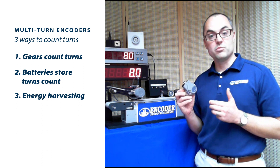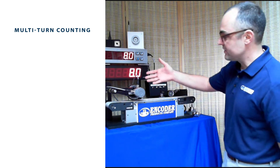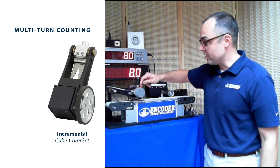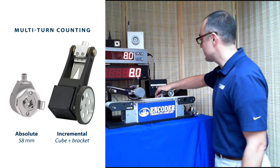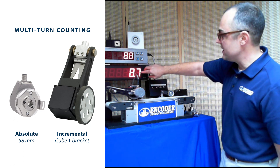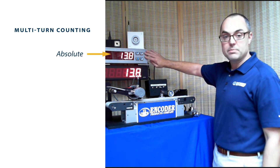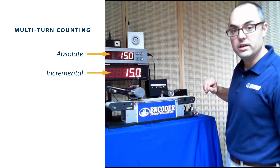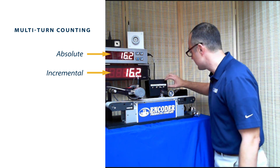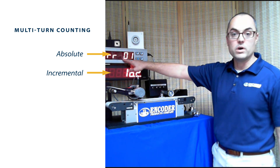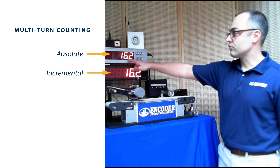Here we have a conveyor belt with an incremental cube encoder on it, and hanging off the back is our 58-millimeter multi-turn encoder. Starting the conveyor belt, you can see both displays are in sync — the top display is the absolute encoder and the bottom is the incremental encoder. If I stop the conveyor and turn the absolute encoder power off, you can see an arrow indicating it's no longer communicating. When I turn the power back on, it goes right back to where it was — it didn't forget, it didn't go to zero.